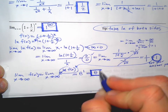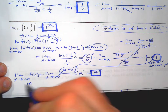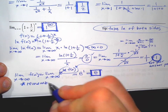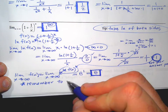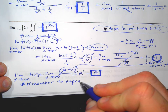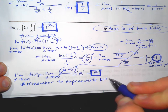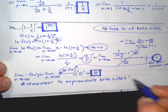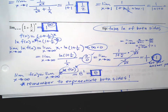So 1 to the infinity isn't 1 — it's e, which is kind of crazy. A very common mistake is for people to just say the answer is 1 and stop. You have to remember to exponentiate both sides to get your final answer — you need to get rid of the natural log we introduced by raising e to that result. So the strategy is: if you have an exponent, take a natural log to get it out, but then you have to get rid of that natural log afterwards.